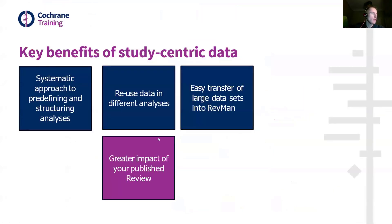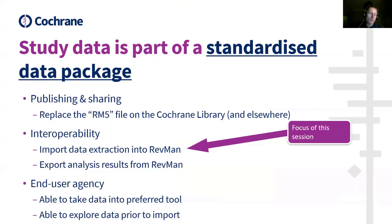I just want to revisit this fourth benefit of study-centric data. We know that publishing data openly increases the impact of research, and working in this way lets you share your study data in a non-proprietary format so that it can be used elsewhere. The study data format you will see being used to transfer data between Covidence and RevMan is also published with reviews on the Cochrane Library as part of a larger standardized data package. The aim is to empower as many people as possible to use the data, take it into whatever tool is available to them, or explore the data in readily available tools such as Excel.